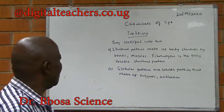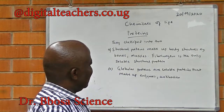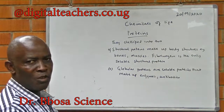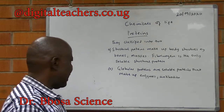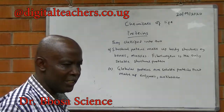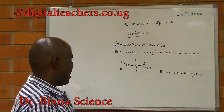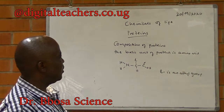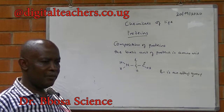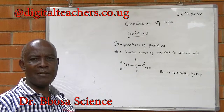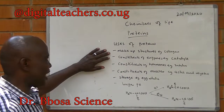Proteins are classified into two. A) Structural proteins make up body structures such as bones and muscles. Fibrinogen is the only soluble structural protein. B) Globular proteins are soluble proteins that make up enzymes and antibodies. The basic unit of a protein is an amino acid. An amino acid has an amino group and a carboxylic group joined to an R group. There are about 22 amino acids in the body, of which those that cannot be made in the animal body are called essential amino acids.